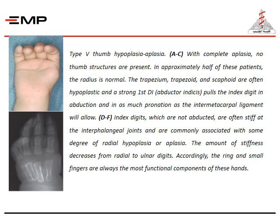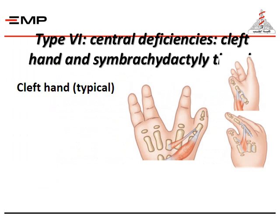In approximately half of type five patients, the radius is normal. The trapezium, trapezoid, and scaphoid are often hypoplastic with a strong first abductor indicis. Type six includes central deficiencies: cleft hands and symbrachydactyly.